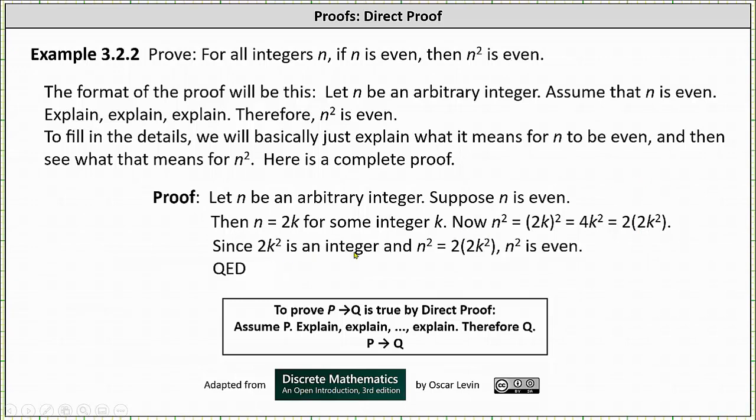Since 2k² is an integer and n² = 2(2k²), notice n² is a multiple of 2. Therefore n² is even and the proof is complete.